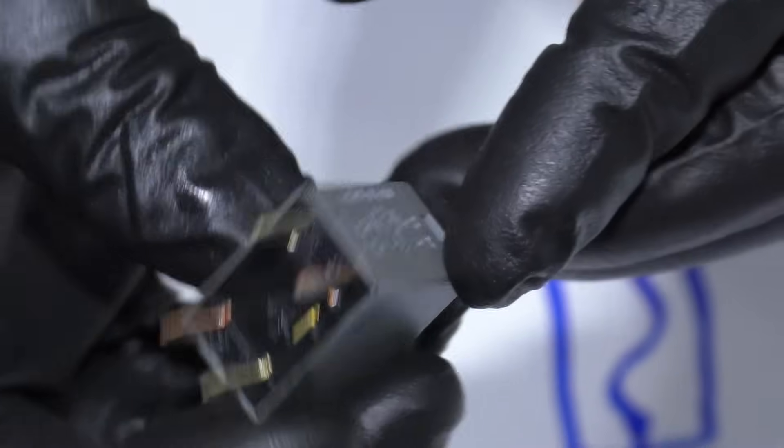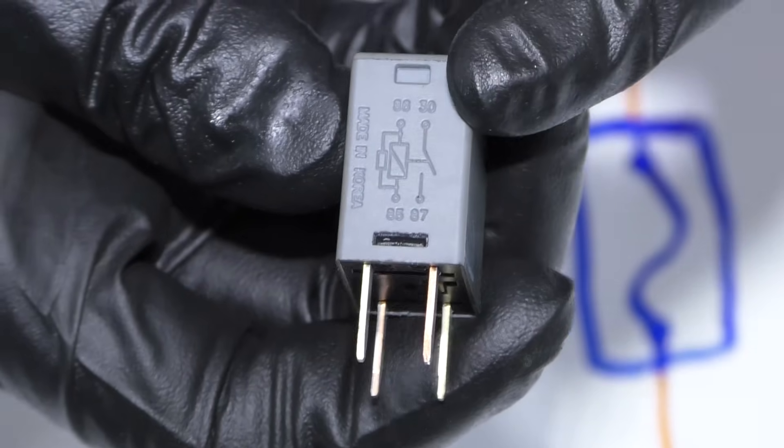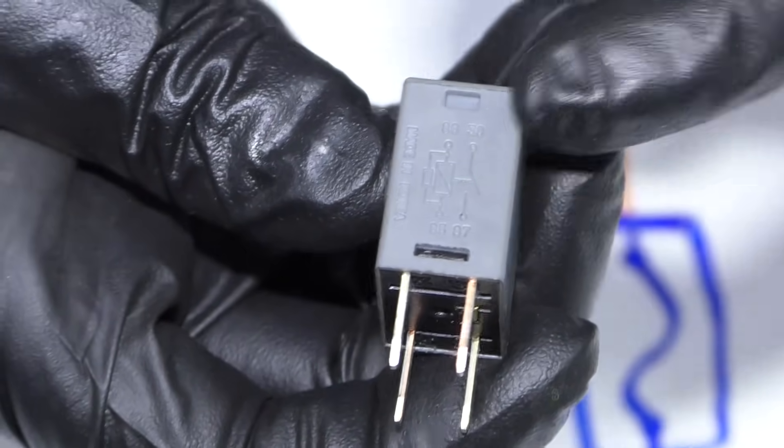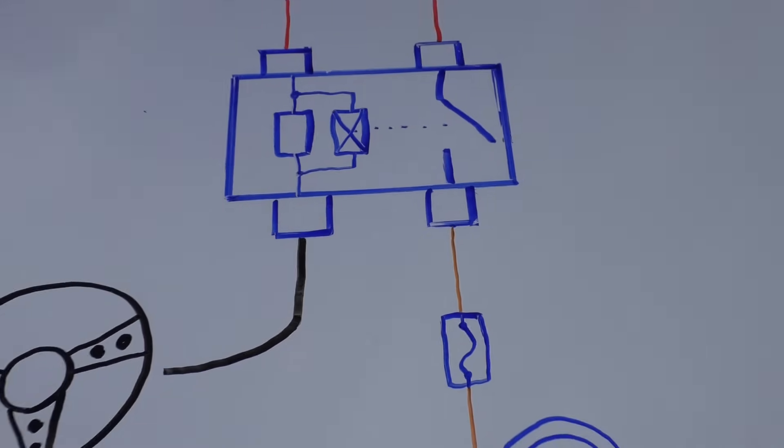Even these are fuses. So here's a common four-prong relay, and on the side of it, most of them have a little key that explains the wiring diagram for the relay, and the little pins are numbered on the bottom. And this picture represents how this relay works.